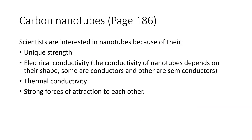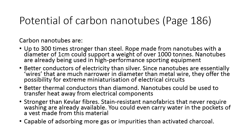Scientists are interested in nanotubes because of their unique strength and good electrical conductivity. Electrical conductivity of nanotubes depends on their shape — some are conductors, some are semiconductors. They also have good heat conductivity and show forces of attraction to one another. Carbon nanotubes have both properties of fullerene and graphene, meaning they can conduct electricity because they still have delocalized electrons.